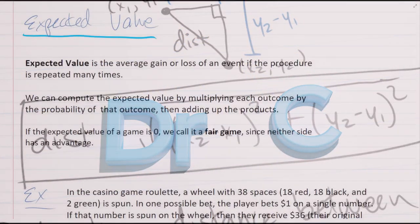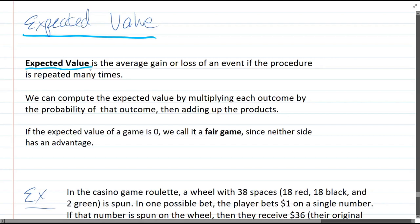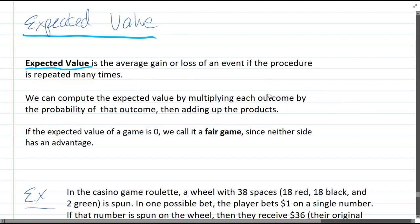We're going to look at expected value now. The expected value definition is the average gain or loss of an event if the event or procedure is repeated many times. So you do something once, you might win, you might lose, but if you do it a thousand times, you're going to win and lose based on the chance or probability of winning and losing. If you multiply it by the outcome, that's how you get the expected value. So you add those up. To compute the expected value, you multiply each outcome by the probability and the value of the outcome, then you add up those products, and we'll be doing that here on each of these examples.